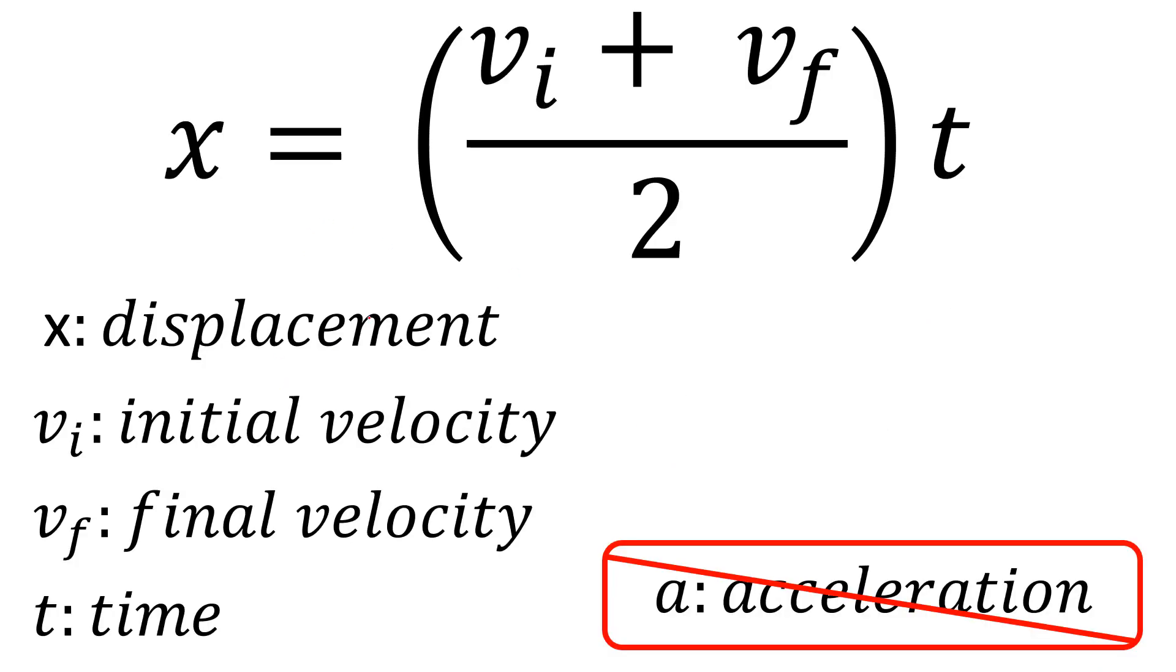x is displacement, vi is initial velocity, vf is final velocity, and t is time. We have no acceleration - we wouldn't want to know acceleration, and we wouldn't have acceleration as one of our givens.